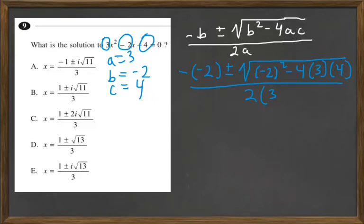What is the solution to 3x squared minus 2x plus 4 equals 0? In the interest of time, I went ahead and dissected this, and you're going to have to use the quadratic equation, which is right here.